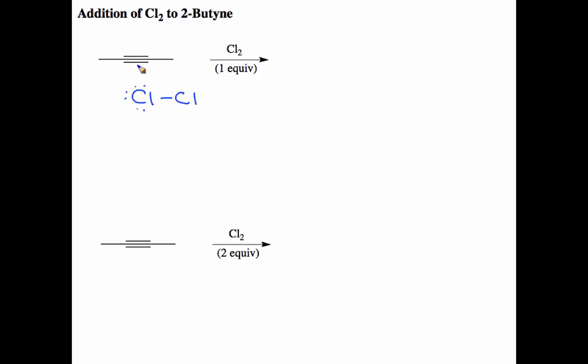So what happens is this nucleophilic alkyne attacks this chlorine atom, and at the same time we lose a chlorine, and then from this original chlorine atom the lone pair comes back and attacks the other carbon of the alkyne. So we end up with two bonds to this first chlorine. We also go from an alkyne to an alkene.